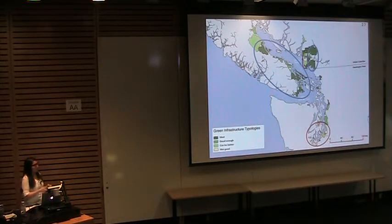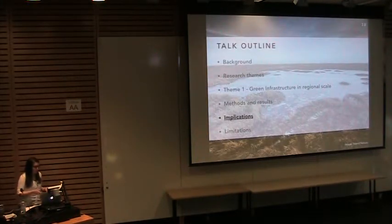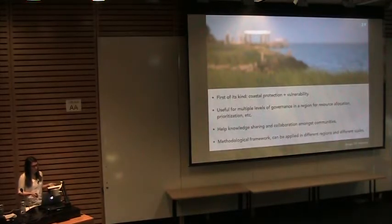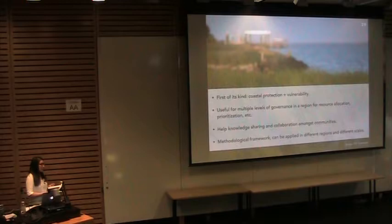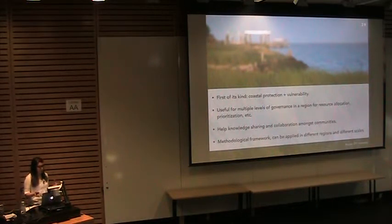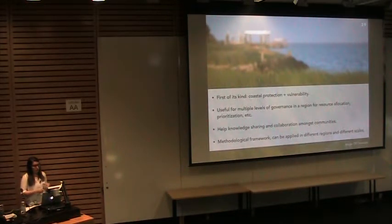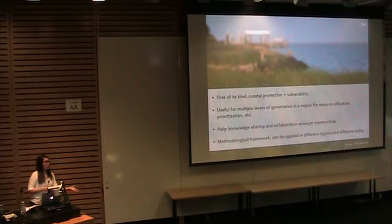I believe this research and its findings have four main implications. First, this is the first of its kind where coastal protection and vulnerability were accounted together. Second, it is useful for multiple levels of governance in terms of resource allocation and prioritization of projects or funding. Third, it helps knowledge sharing in the region — communities can learn from each other and can foster collaboration. Fourth, the methodological framework can be applied to different scales and different regions, from a very neighborhood scale to a very large national scale as well.